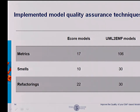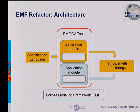We implemented over 100 metrics for UML and EMF models, and about 30 smells and refactorings. Also a number of E-core techniques for E-core models. If this is not enough, or you want to create some quality assurance techniques for your own domain-specific modeling language, you can do this using the second tool — the generation module — for generating these metrics, smells, or refactoring plugins.